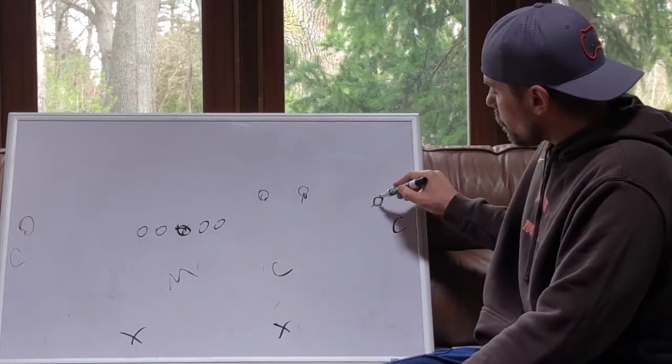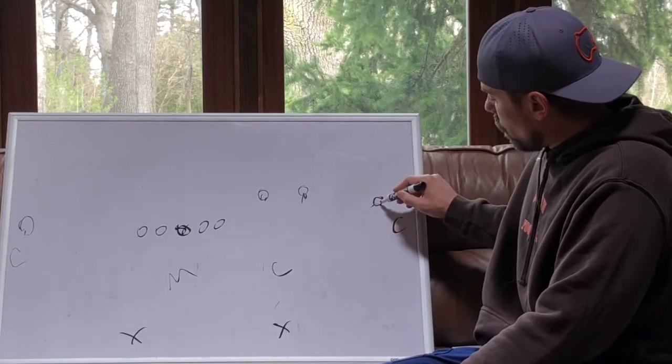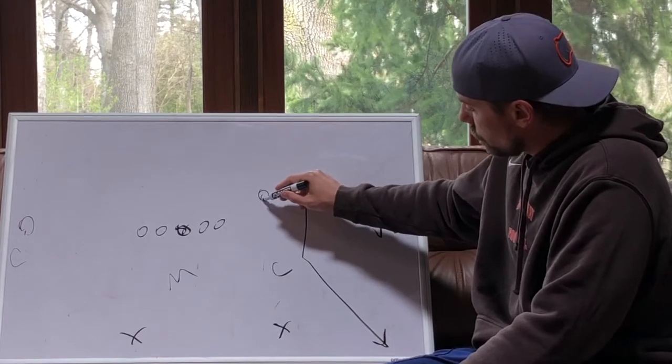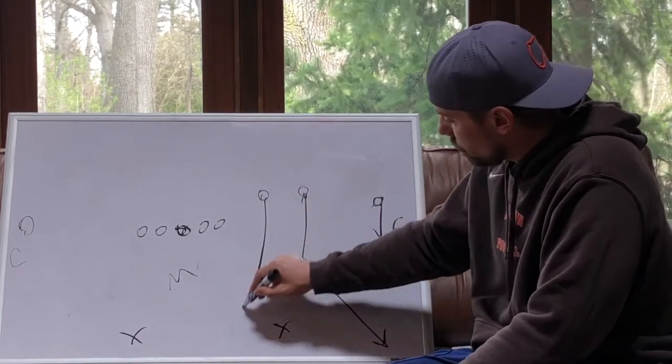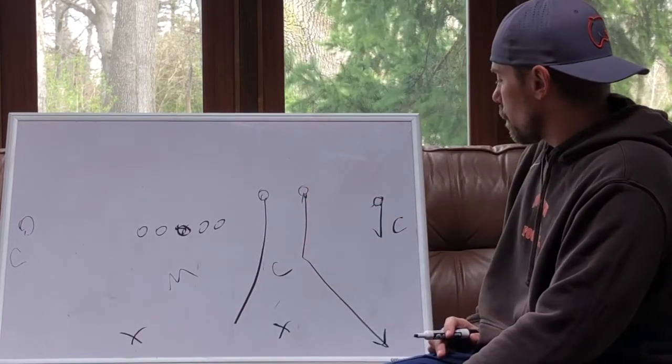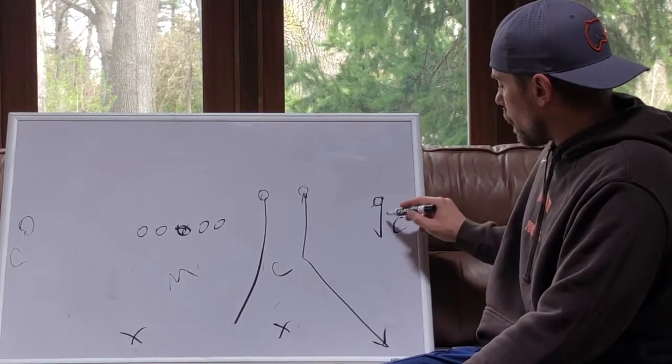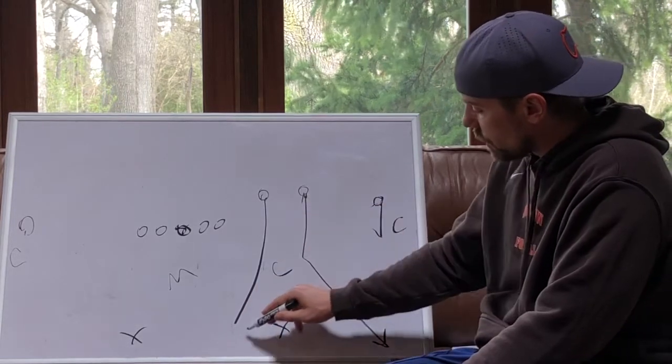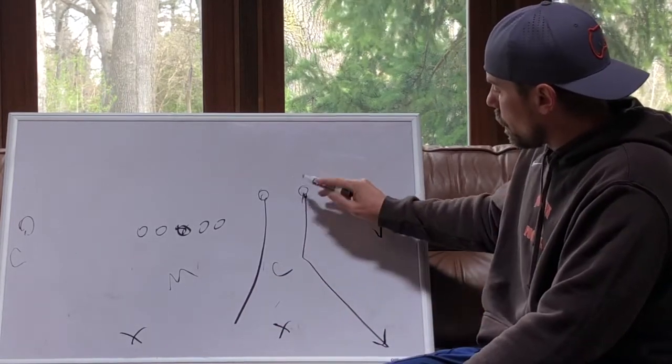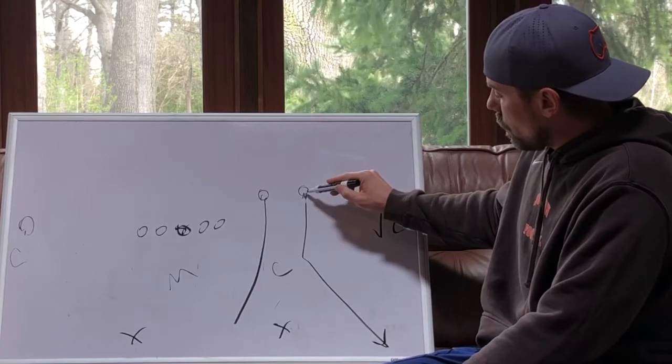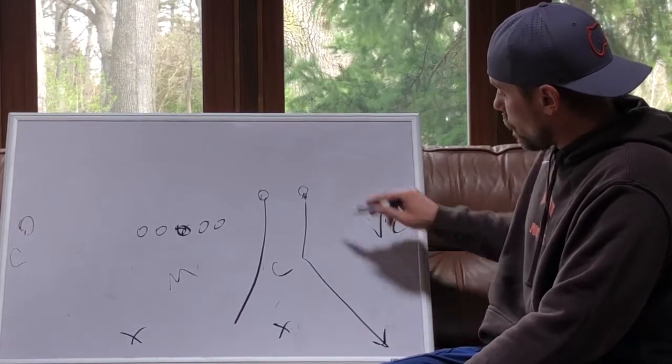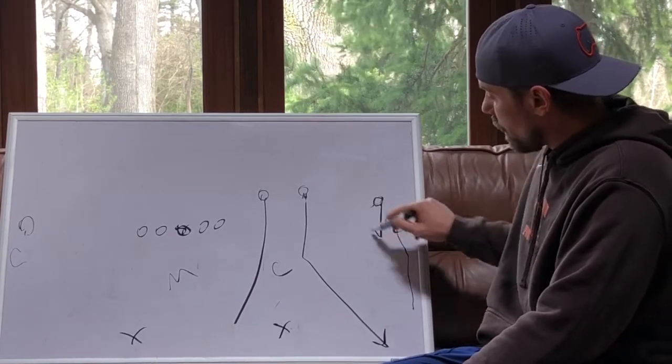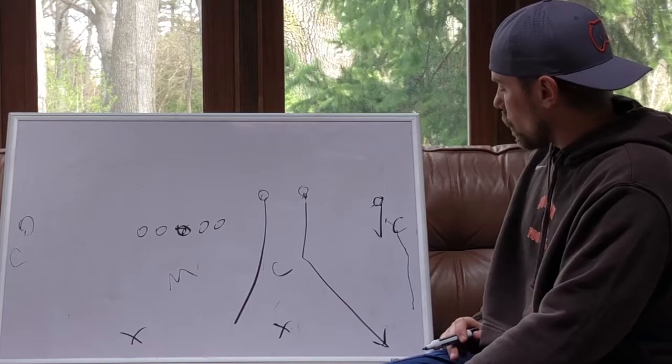So we're running smash. We're going to go hitch, corner. So it's a simple high-low read now. Now this is very tough for this safety to get to this, especially with this guy stretching the inside of him here. So if the corner, see the corner, throw the corner. You're the quarterback. Corner sinks, send the hitch. Simple. That's what we call smash.